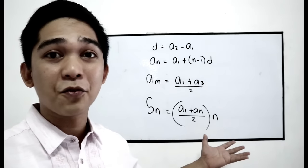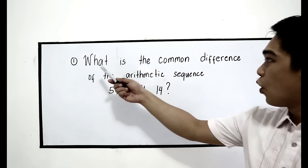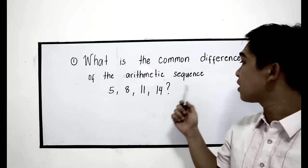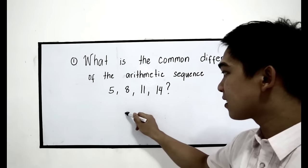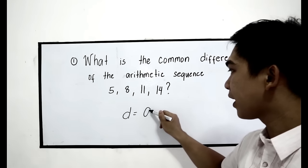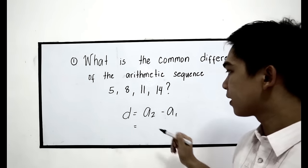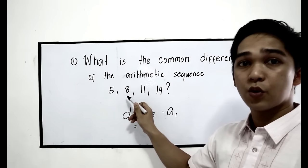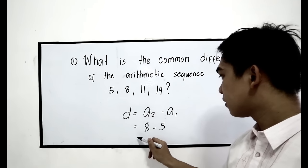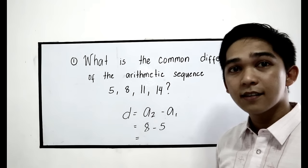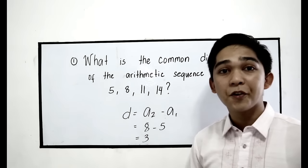Those are the different formulas we are going to use. Now let us check your understanding with some different examples from lesson 1. Number 1: what is the common difference of the arithmetic sequence 5, 8, 11, 14? The formula is d is equal to a2 minus a1. A2 is 8 minus a1 which is 5. The difference is 3. So the common difference is 3.